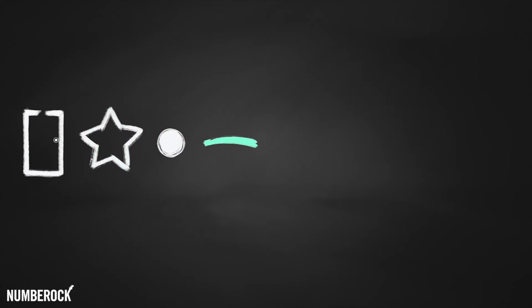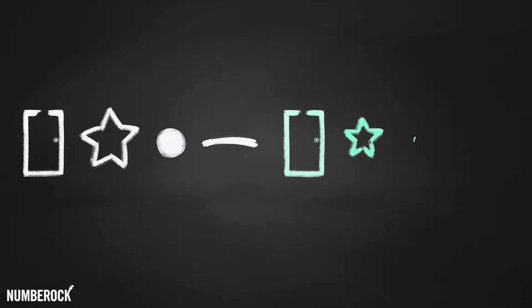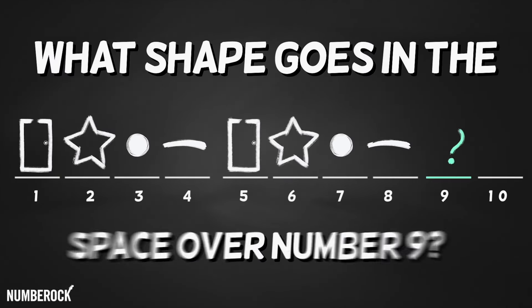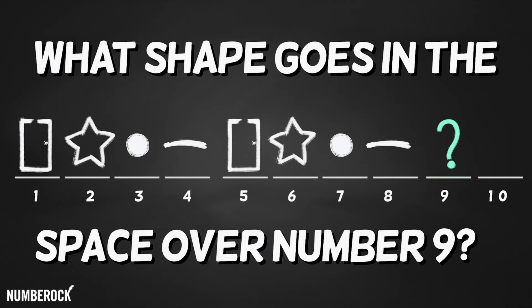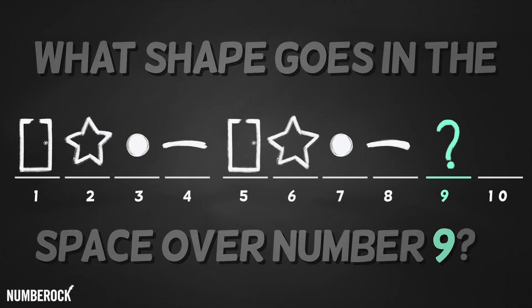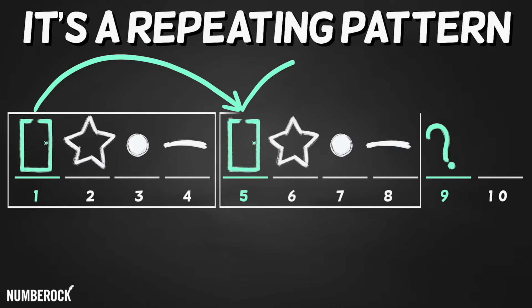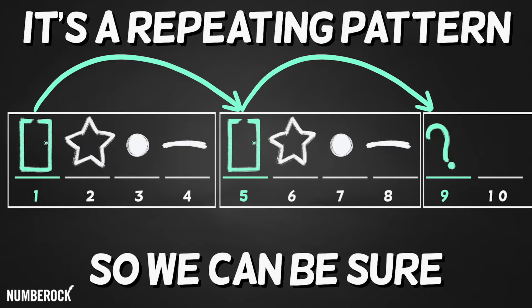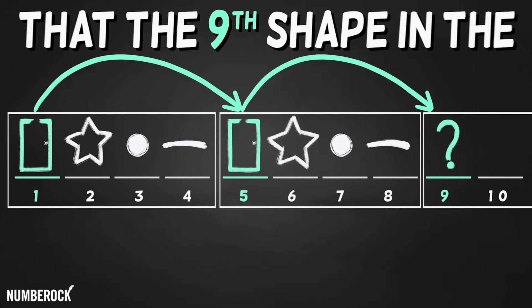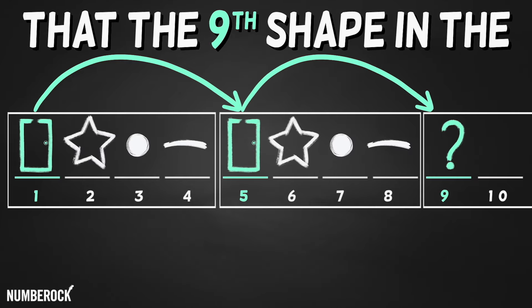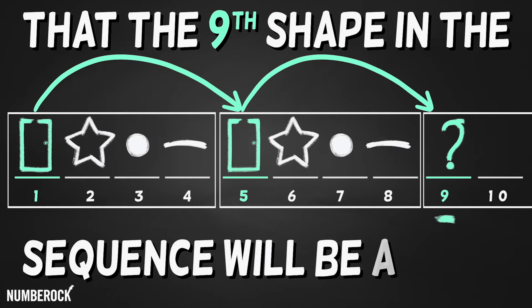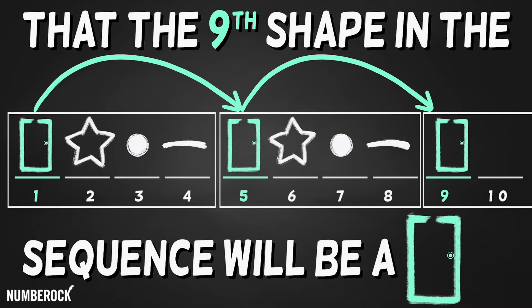Doors start a line, doors start a line. Which shape goes in the space over number nine? It's a repeating pattern so we can be sure that the ninth shape in this sequence will be a door.